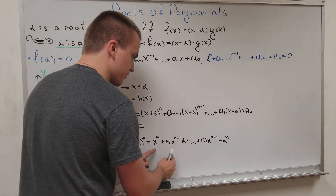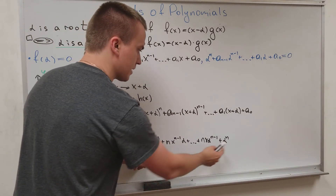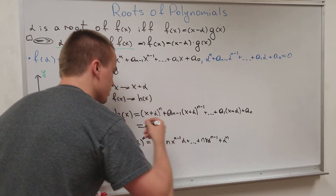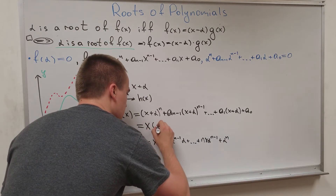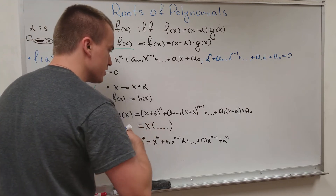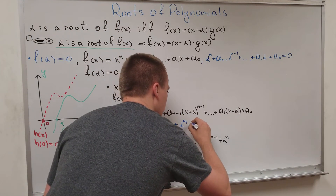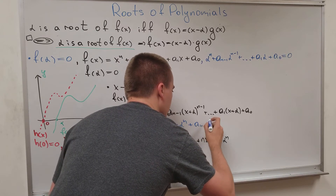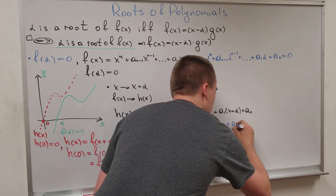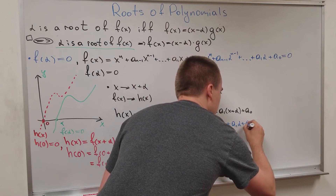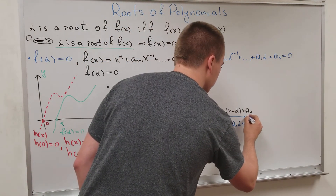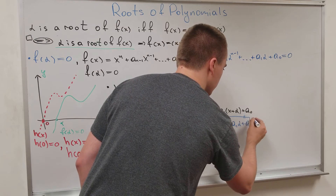So every term in the expansion of h(x), except the free (constant) term, has a factor of x. I factor out x, and what remains as the free coefficient is exactly alpha^n + a_{n-1} alpha^{n-1} + ... + a_1 alpha + a_0 — which equals zero, since f(alpha) = 0. Therefore my free coefficient is zero, and h(x) = x times some polynomial.